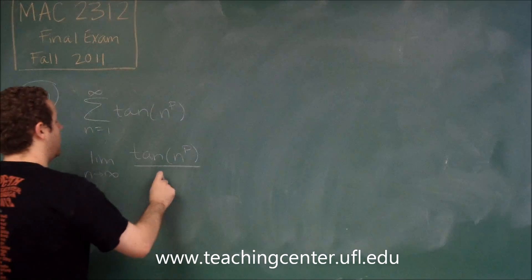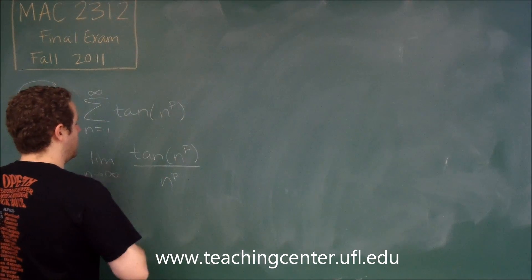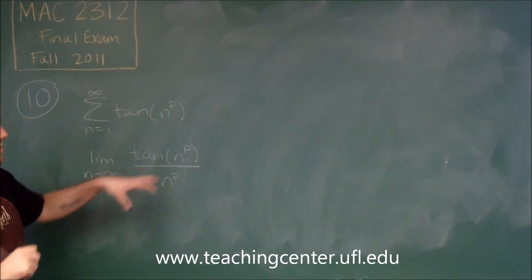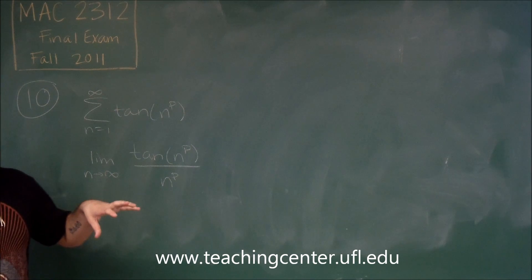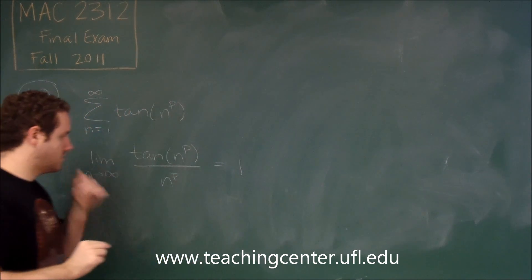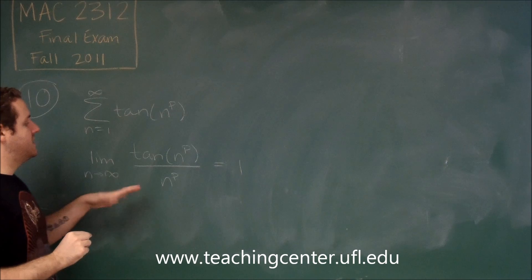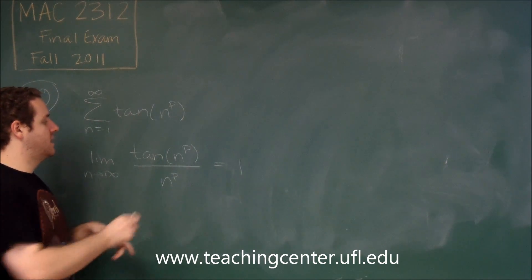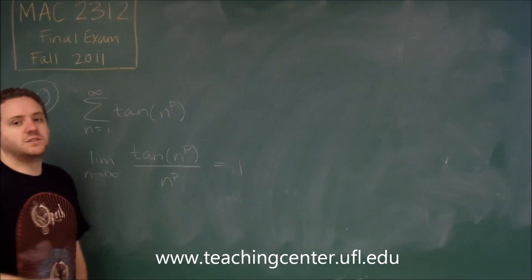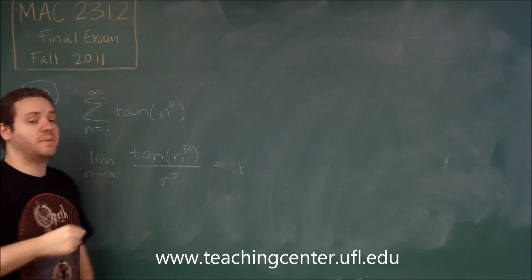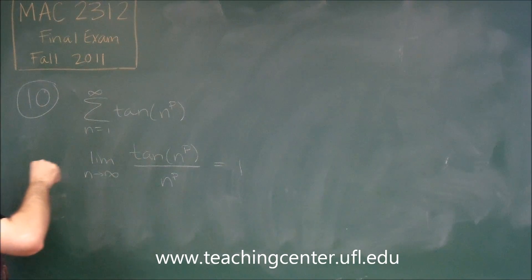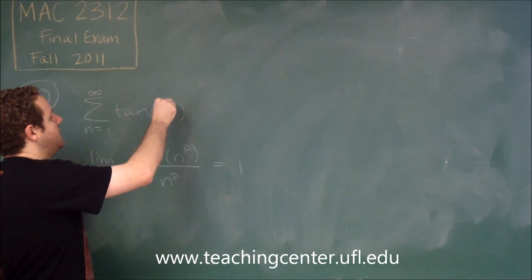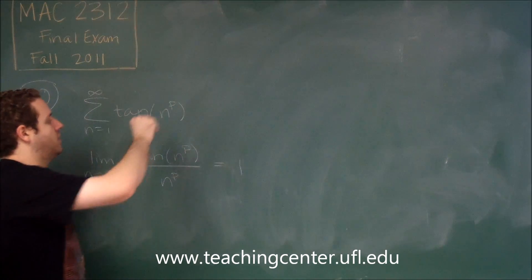We can definitely do that by choosing n to the p, because tan theta over theta, in this case, is going to be equal to 1. Keep in mind, that's as long as these are fractions, because this n to the p term has to be going to 0.